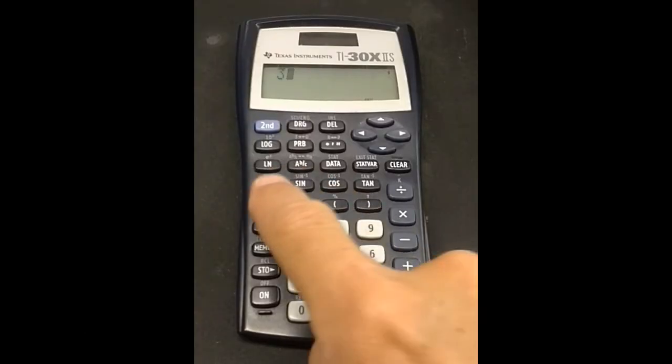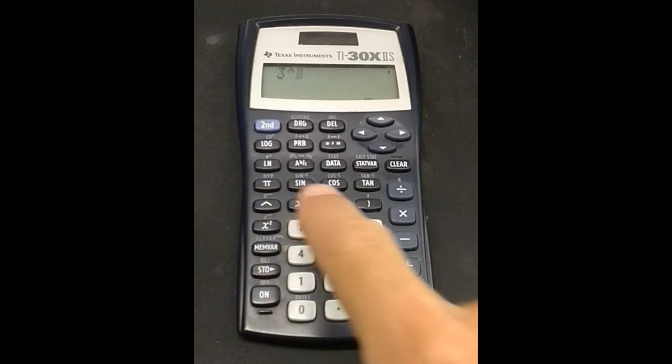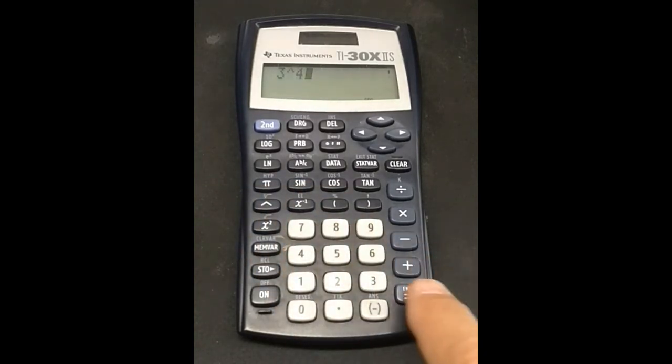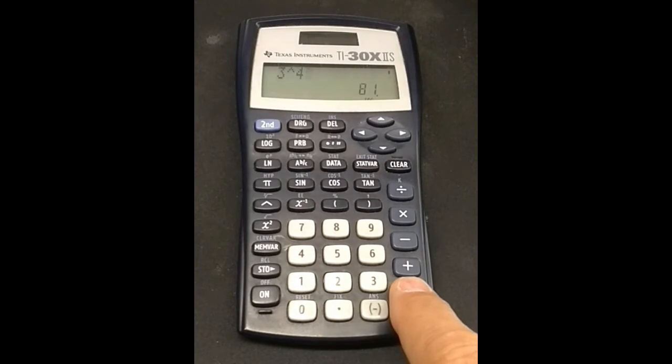You may be asked to make calculations with different exponents. For example, what is 3 to the fourth power? On a lot of calculators, an exponent is indicated by using the caret button, which looks like this. In this example, we would enter into the calculator 3 raised to the fourth power, which is 81.